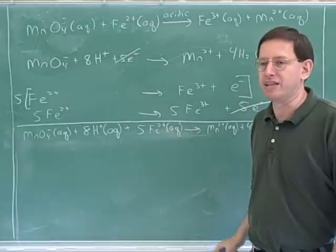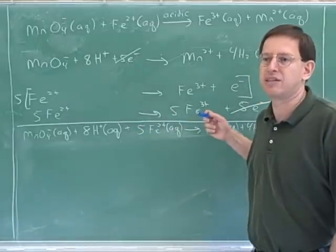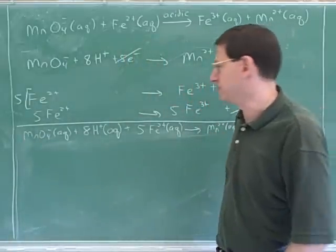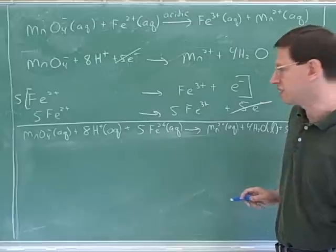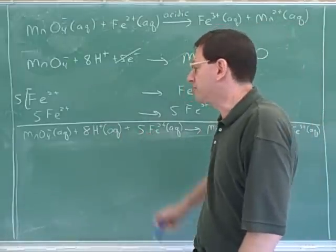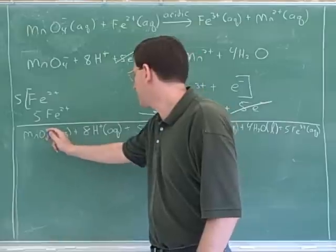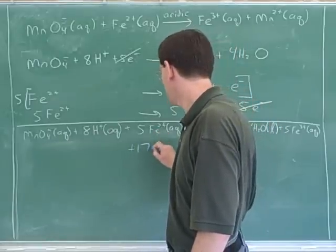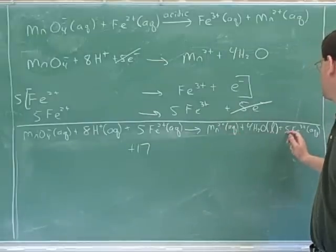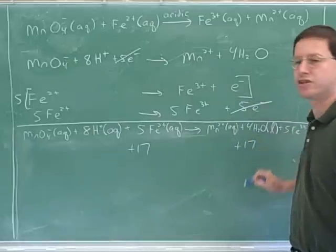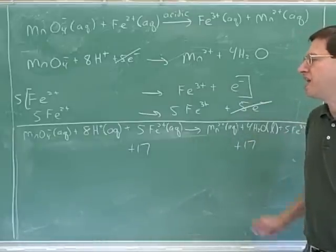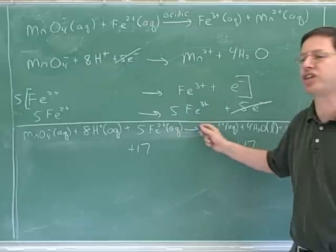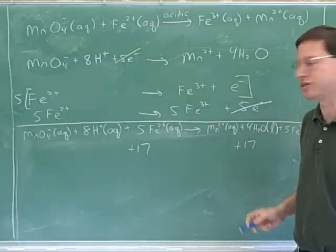We should now check to make sure everything balanced. What do you have to check to make sure everything balanced? You have to make sure that all the elements balance and that the charges balance. For example, do the manganeses balance? Yeah. We have one manganese here and one manganese here. So you should check that the oxygens balance. Four oxygens here, four oxygens here. You should check that the hydrogens and the irons balance. And then you should still check that the charges balance. This is negative 1 plus 8 is positive 7, plus 10 is positive 17. And what's the charge on the right-hand side? Plus 2 plus 5 times 3 is also positive 17. So the charges do balance.